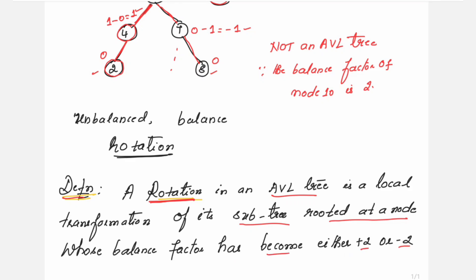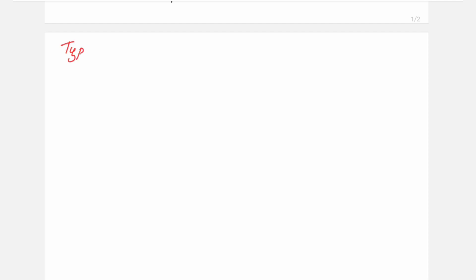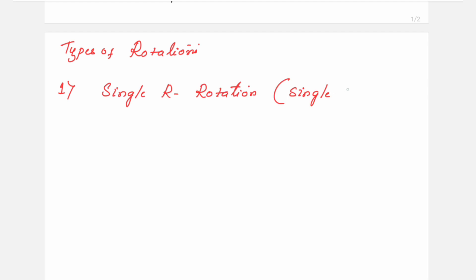In a tree, when you see a particular node having a balance factor of plus 2 or minus 2, we rotate the tree rooted at the unbalanced node that is closest to the newly inserted node. The types of rotations are: first, the single right rotation.